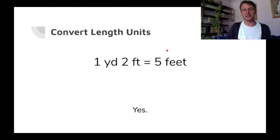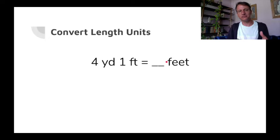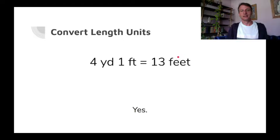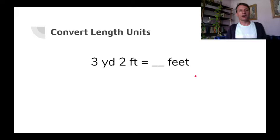Four yards, one foot — how many feet? Well, each of these yards is three feet, so four times three is 12, plus one is 13. And three yards, two feet: three times three is nine, plus two is 11 feet. Beautiful — you see how this works?